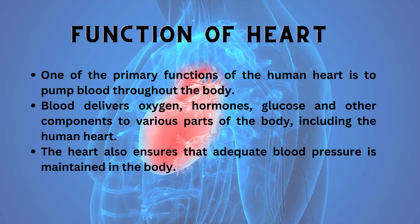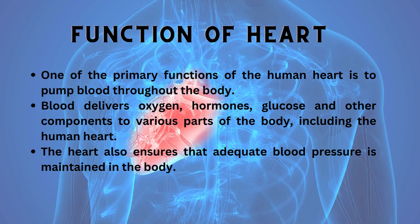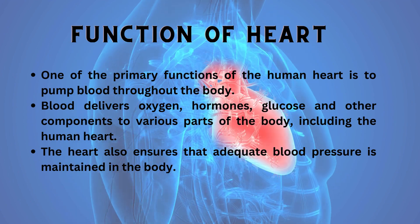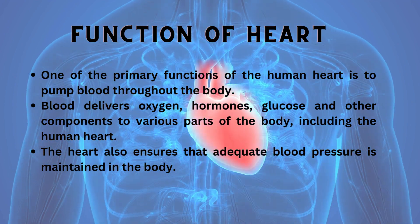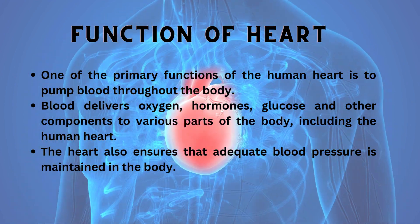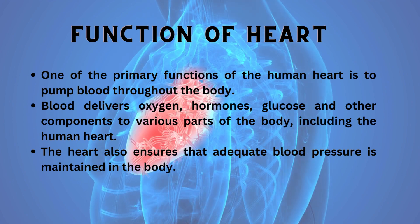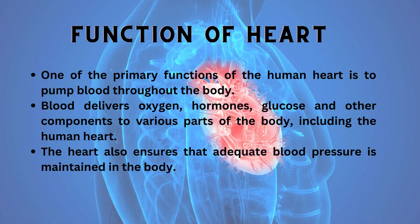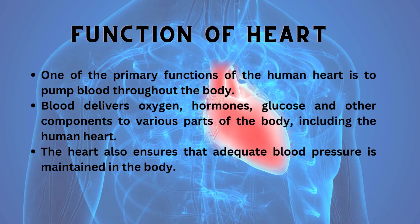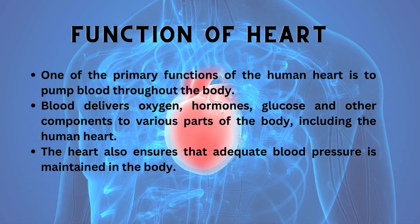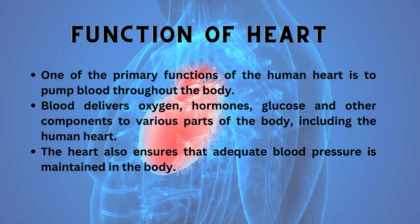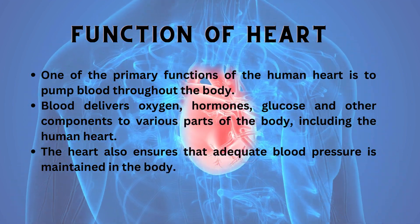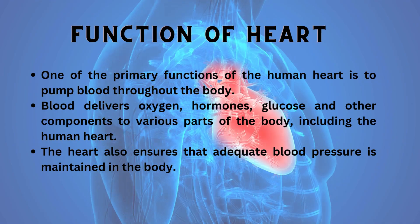The function of the heart in any organism is to maintain a constant flow of blood throughout the body. One of the primary functions of the human heart is to pump blood throughout the body. Blood delivers oxygen, hormones, glucose and other components to various parts of the body including the human heart. The heart also ensures that adequate blood pressure is maintained in the body.